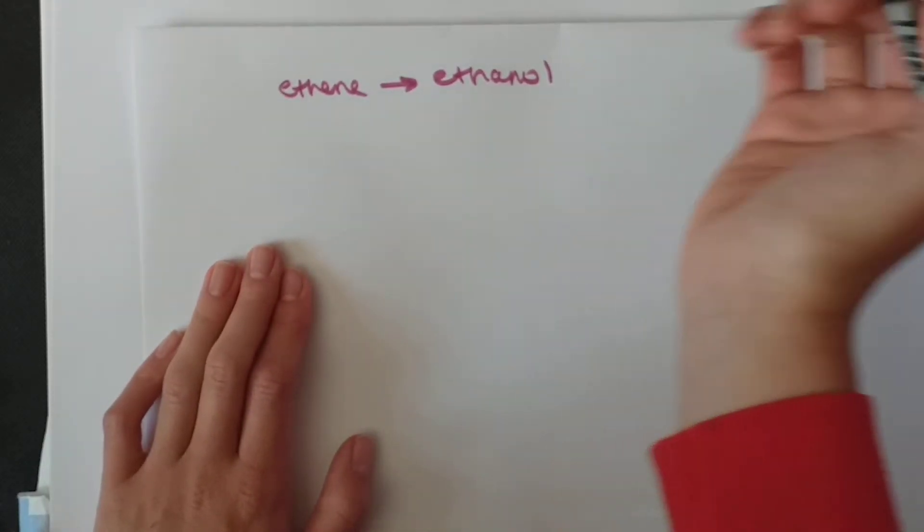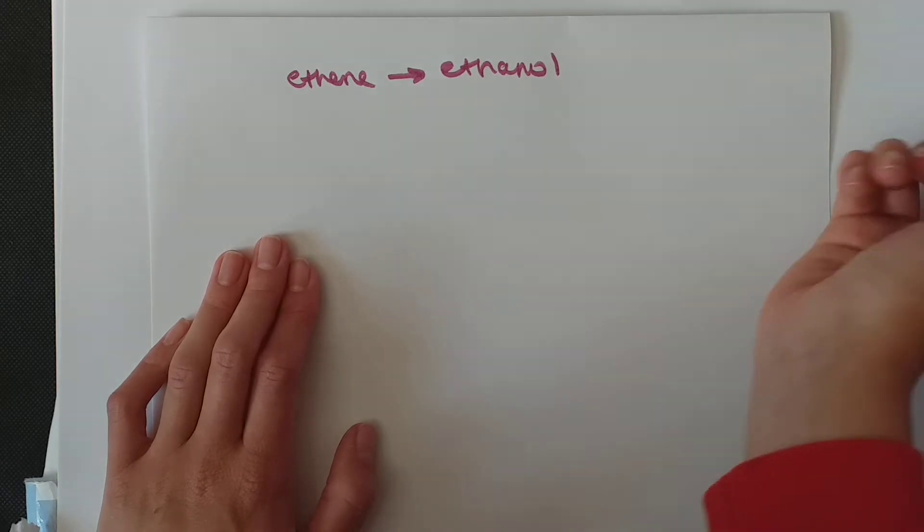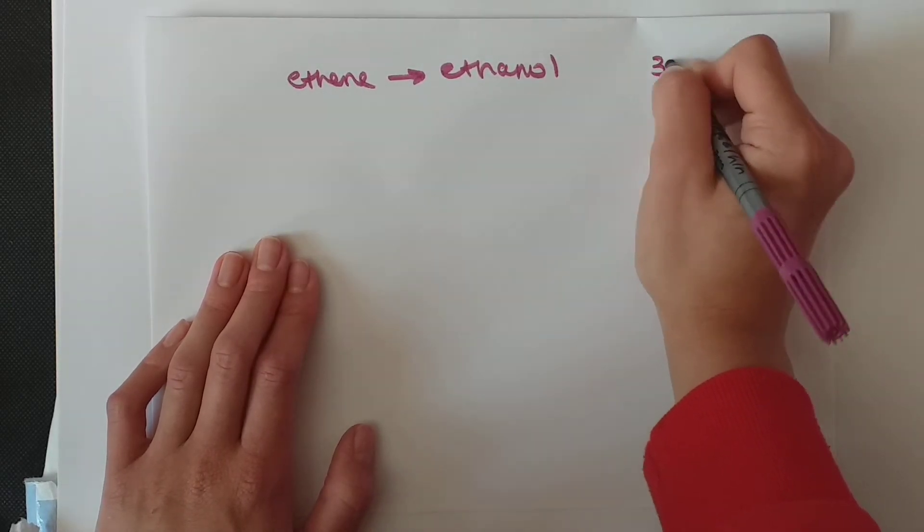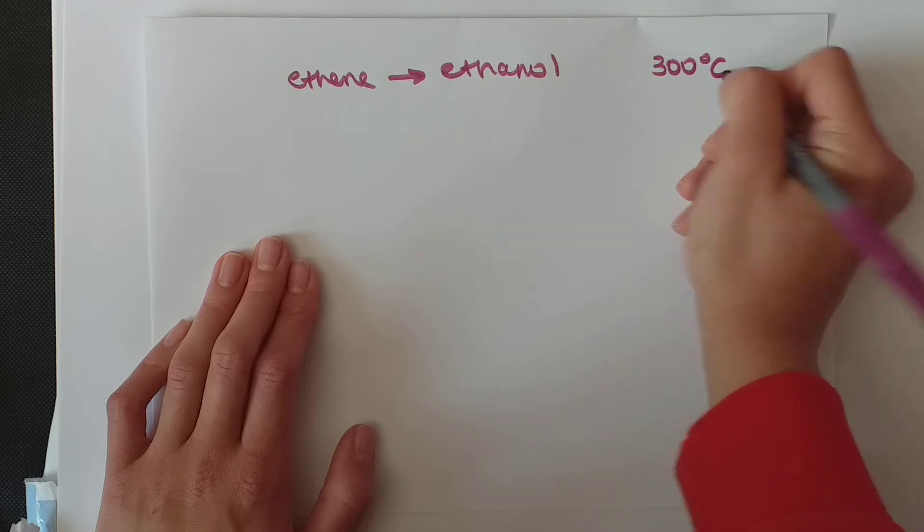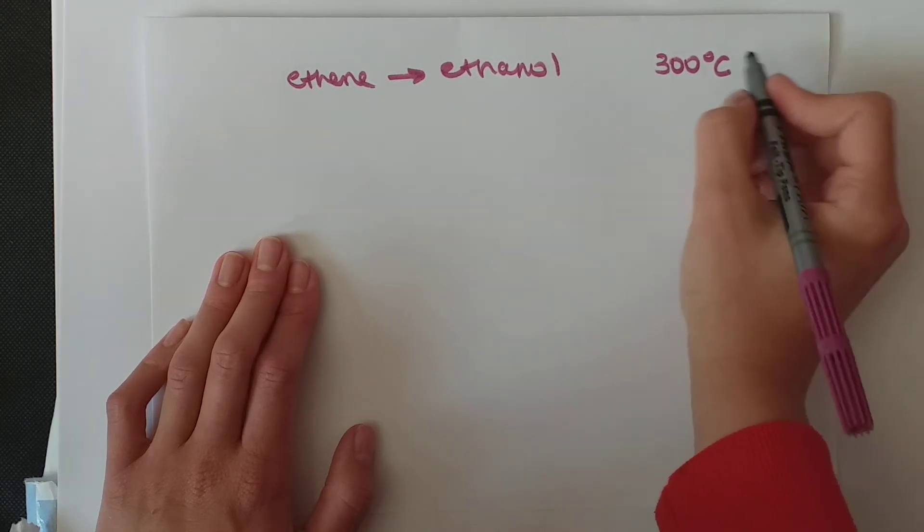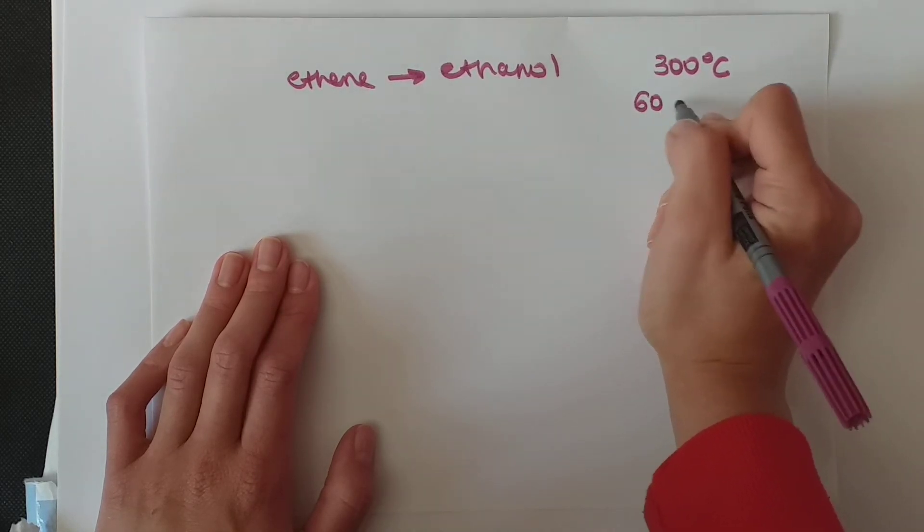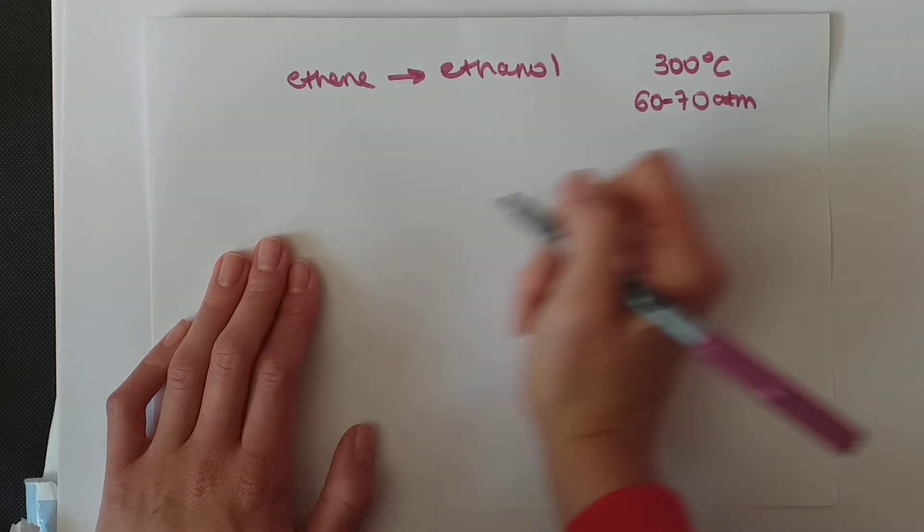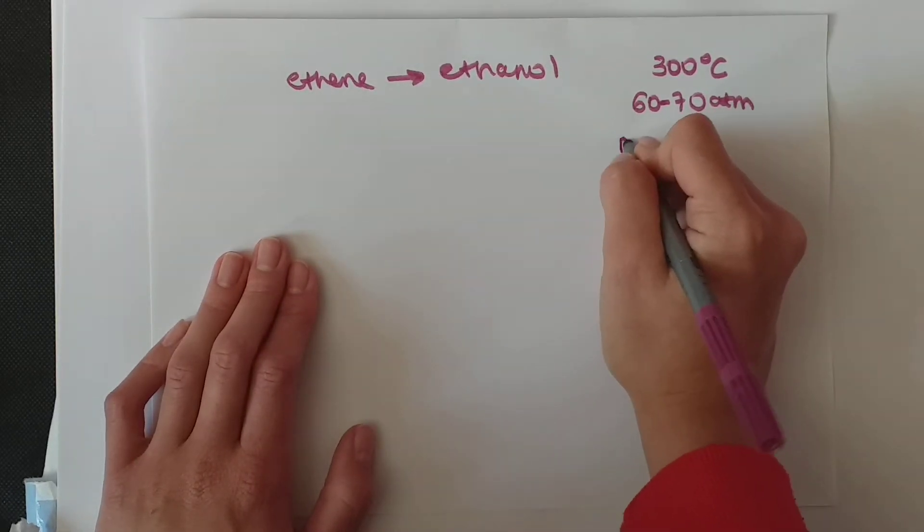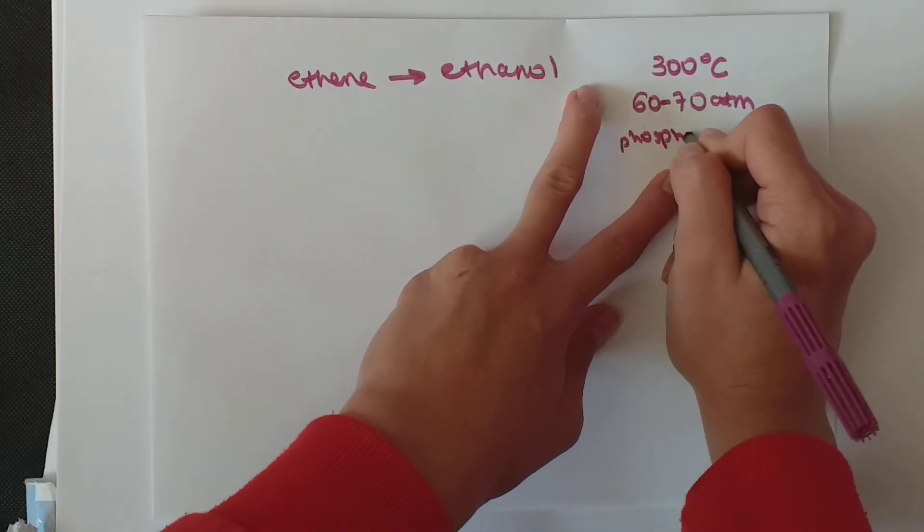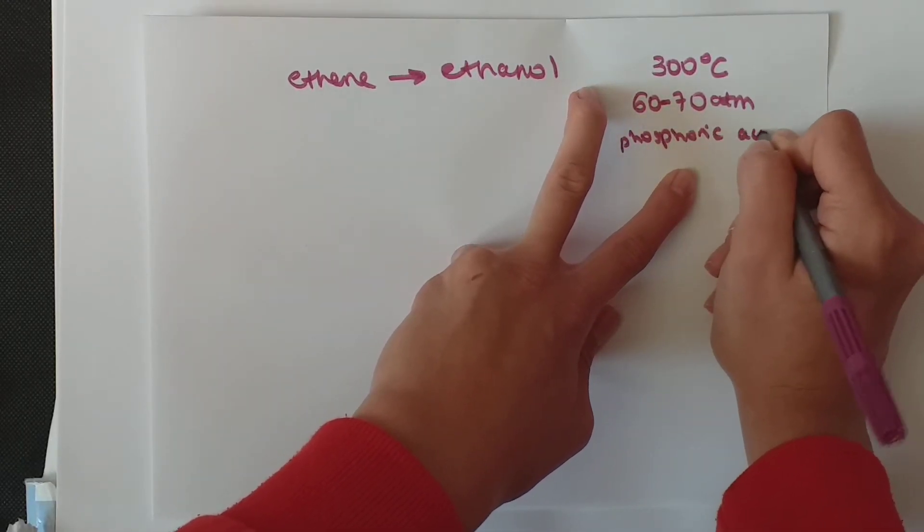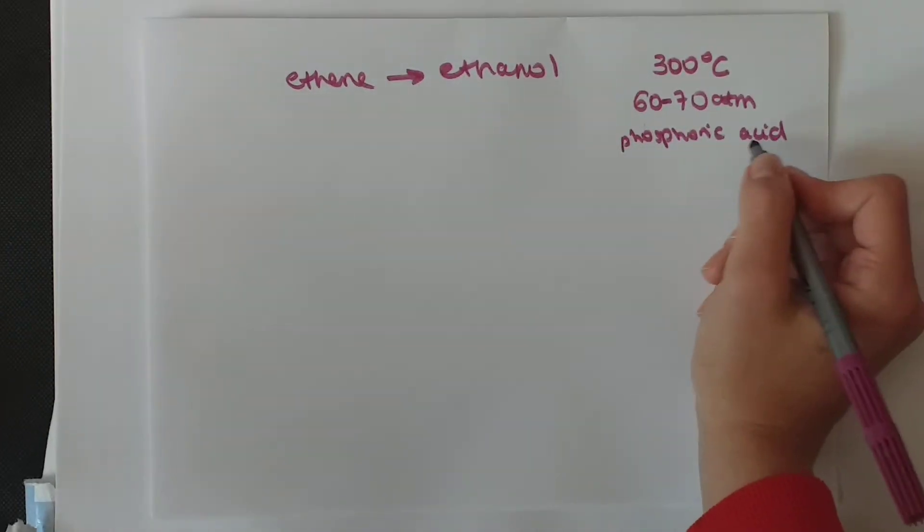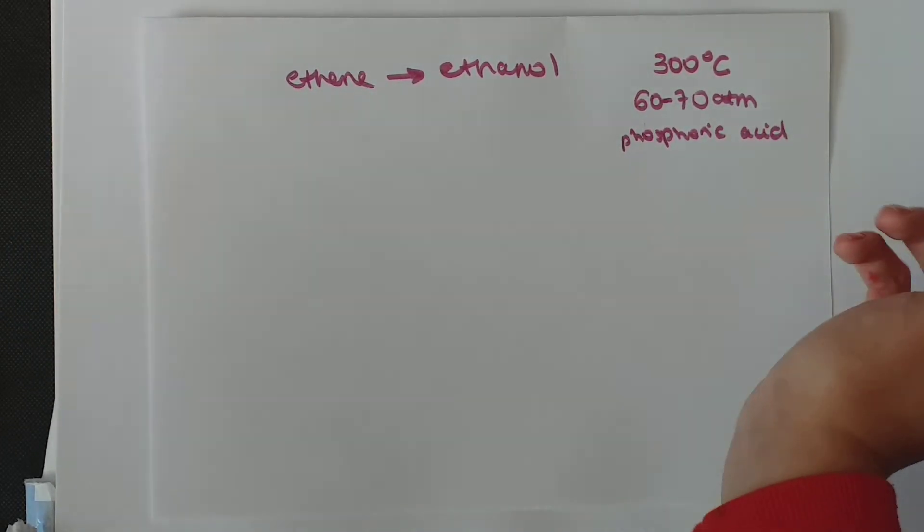There are conditions and reagents which you will need and these are 300 degrees Celsius, 60 to 70 atmospheric pressures, and you also need phosphoric acid which will act as a catalyst. So this is your catalyst for the reaction.